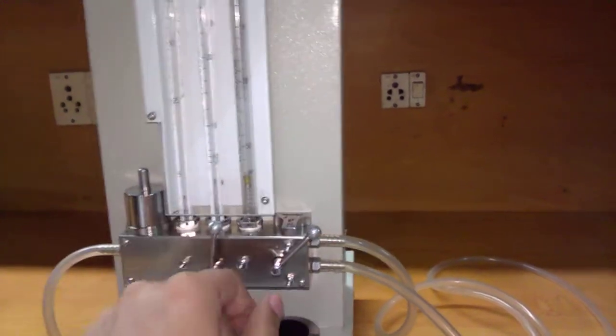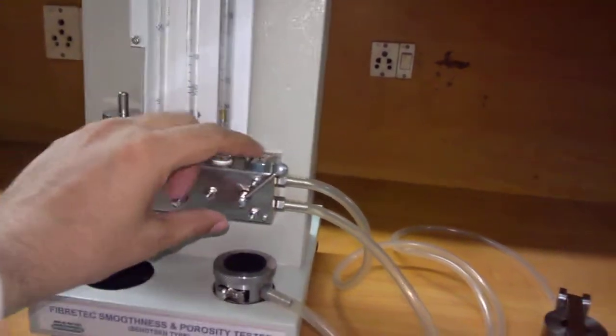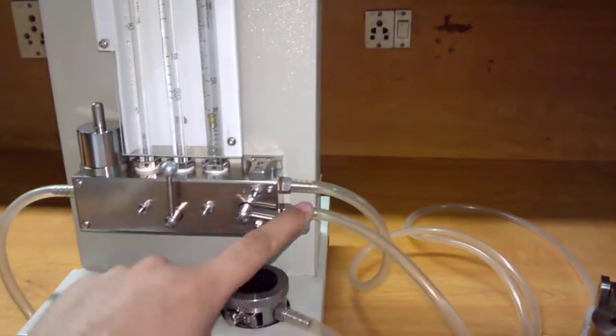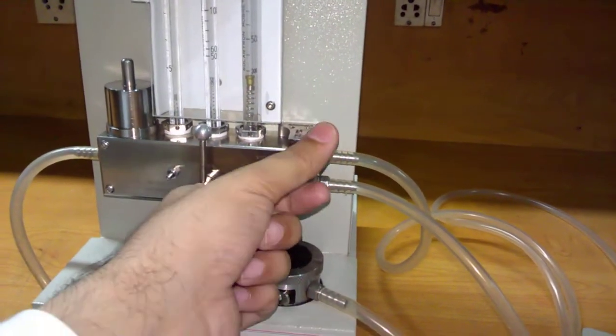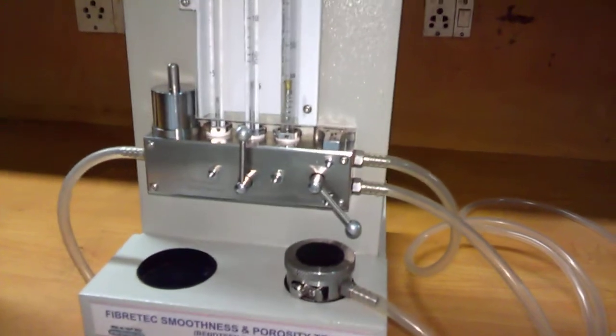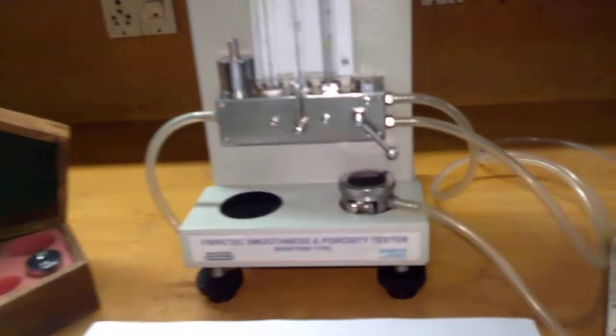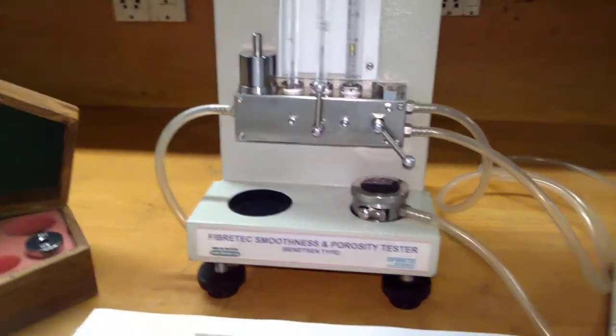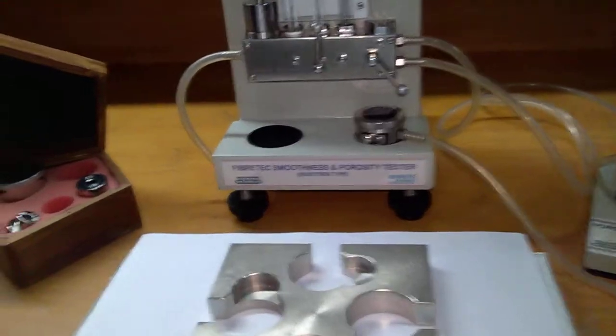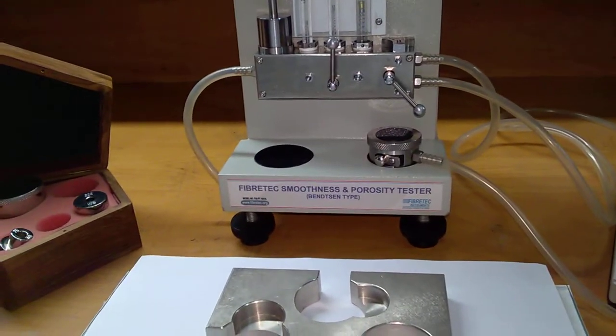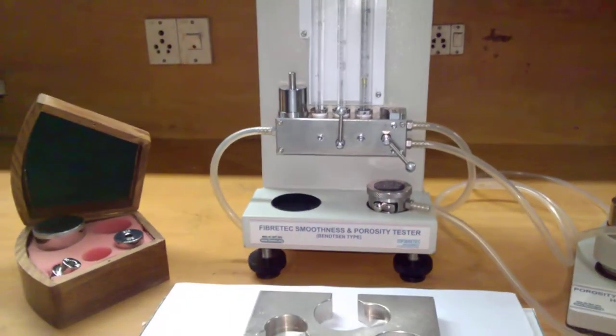At this moment we have set it to the middle position. This is enough to select smoothness at the top position and porosity at the bottom, downward position. We can level the equipment by these feet screws, and after inserting the air at required pressure, we can start the testing.